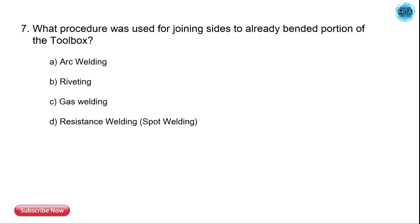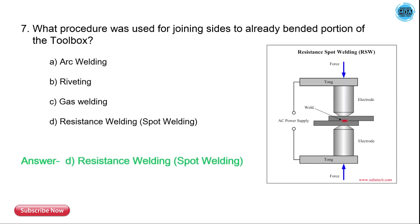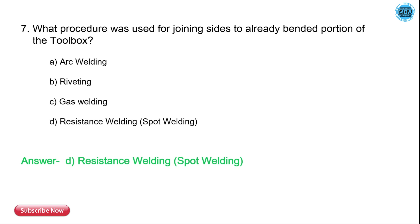The 7th question is: what procedure is used for joining the side to the already bent portion of the toolbox? The options are arc welding, riveting, gas welding, and resistance welding. The correct answer is resistance welding, which is nothing but spot welding.